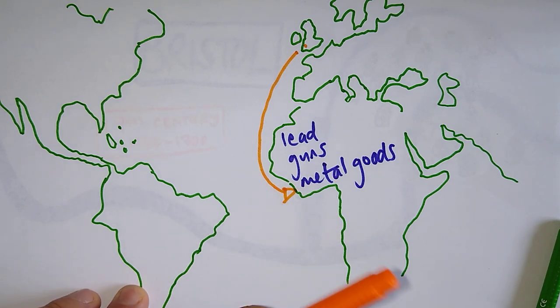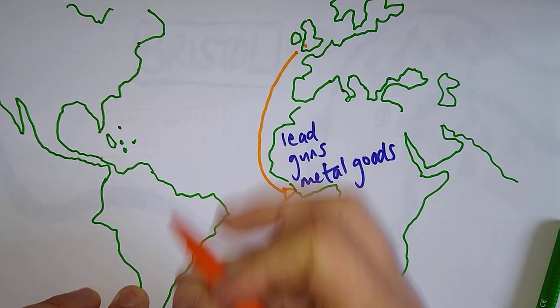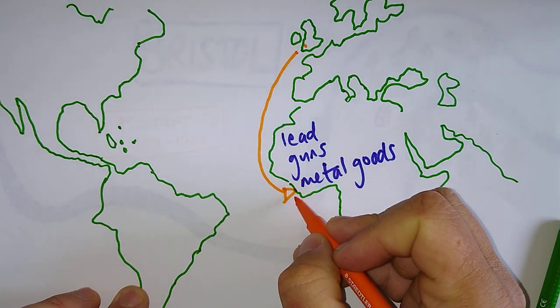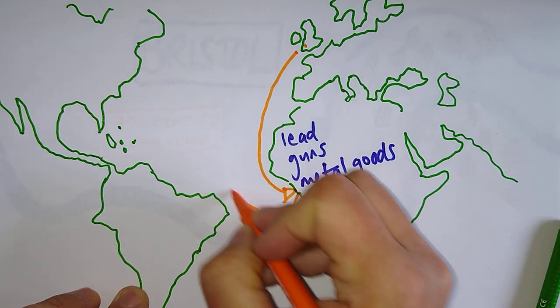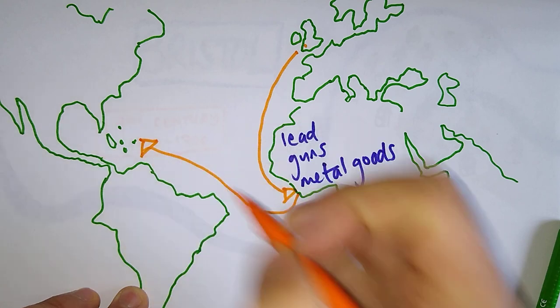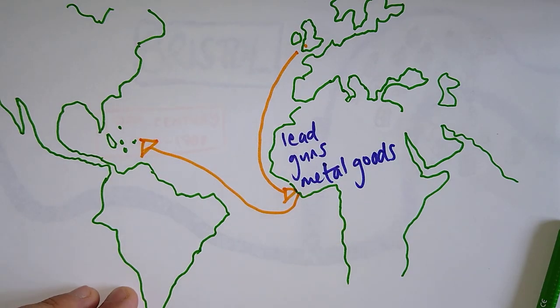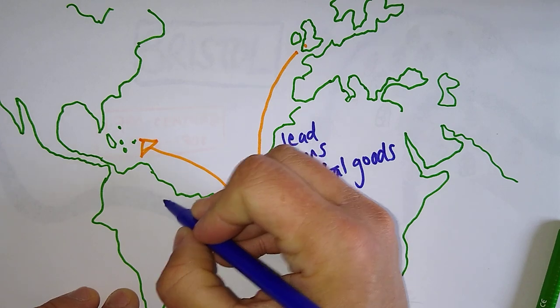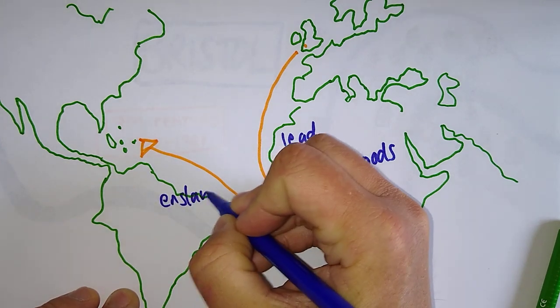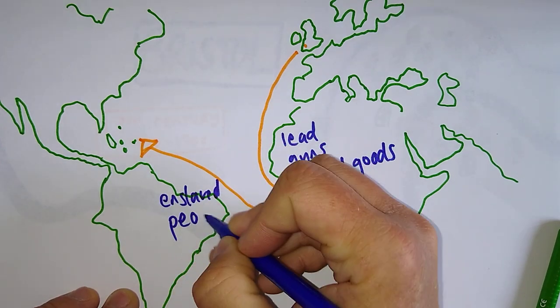In West Africa, the Bristol merchants were swapping those products for human beings. And this is really quite awful. And they were swapping them for enslaved people. So enslaved people from West Africa were then being taken over to the Caribbean. So on this leg of the journey that we sometimes call the Middle Passage, this is where they were taking enslaved people.